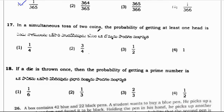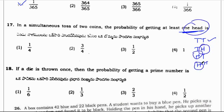In a simultaneous toss of two coins, the probability of getting at least one head. At least one head means minimum one. Total possible outcomes are 4. When two coins are tossed, outcomes are: tail-tail, tail-head, head-tail, and head-head. At least one head gives us three favorable outcomes: 1, 2, 3. Favorable outcomes are 3, total possible outcomes are 4. So 3/4 is the answer, which is correct.